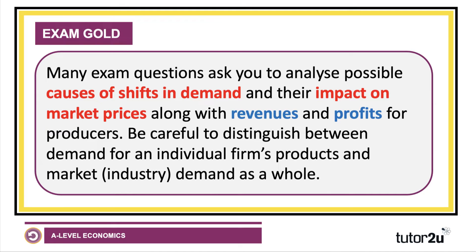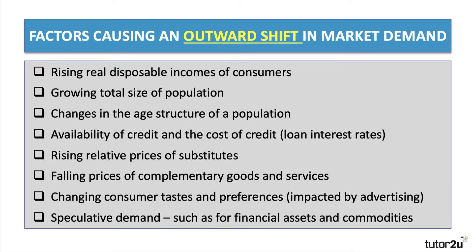There are many factors that can cause shifts in demand. The first is real disposable incomes of consumers — incomes after direct tax and adjusted for inflation. Normally, for most normal goods, as real disposable incomes go up there is growing market demand, particularly for products with a high income elasticity of demand.